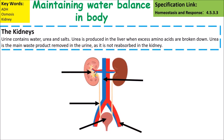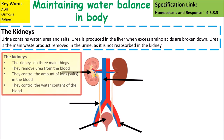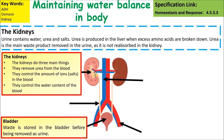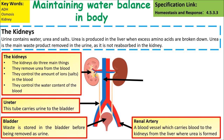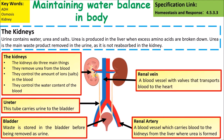Urine contains water, urea, and salts. The body system involved in controlling this is the renal system. The renal system involves the kidneys, where urea is formed and the blood is filtered. The bladder stores waste before it is removed. The ureter is the tube that carries urine from the kidneys to the bladder. The renal artery is the blood vessel which carries blood to the kidneys from the liver where urea is formed, and the renal vein is the blood vessel that transports blood back to the heart from the kidneys.